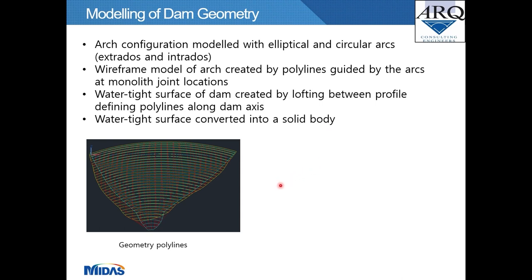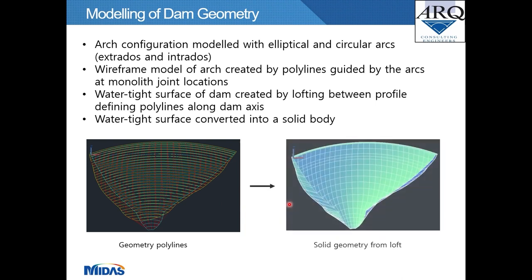The arch dam geometry was modeled with elliptical and circular arcs at extrados and monolith locations. A watertight surface was created by lofting between profile-defining polylines and then converted into a solid body. The image on the left, taken from AutoCAD, shows the wireframe model made up of various arc lines and profile-defining polylines, and the image on the right shows the resulting solid.